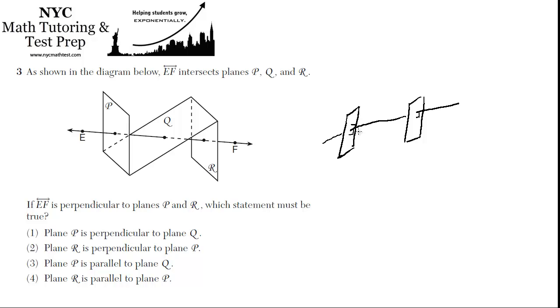Hopefully you can visualize that. Imagine that this line is going through these two planes, and it's literally intersecting at right angles. Then no matter how you move those planes, those planes are going to be parallel to each other.